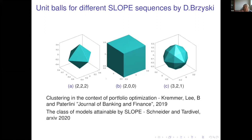This additional shrinkage — clustering coefficients — stabilizes variance and makes SLOPE very proficient in prediction. The clustering properties of SLOPE are something we just started to explore; we have a paper in the Journal of Banking and Finance applying it to portfolio optimization. SLOPE substantially extends LASSO, and the class of models attainable by SLOPE is specified in a recent paper by Ulrike Schneider and Patrick Tardivel.